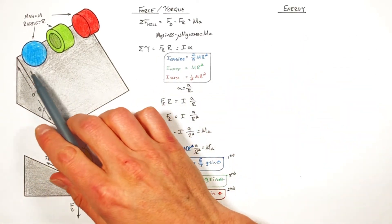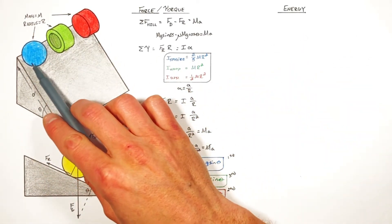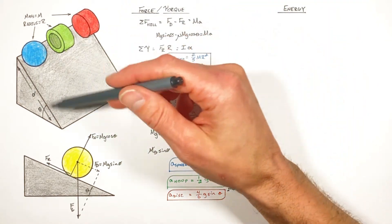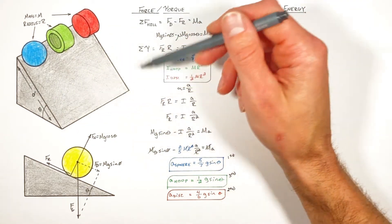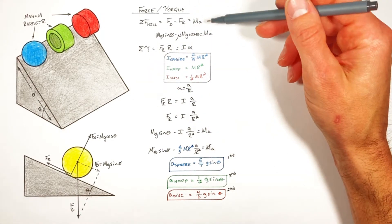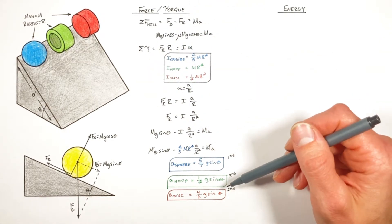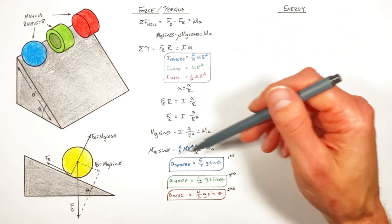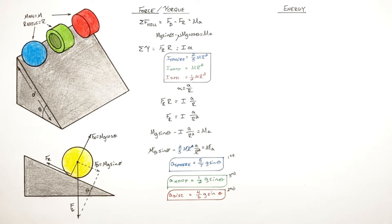All right YouTube, we've been talking about this situation where we've got a ball, a hoop, and a disc, and we're allowing them to roll without slipping down some hill. We're trying to solve for the acceleration of each of these objects at the bottom of the hill. Now we've done this using force and torque, which is the way you'd typically see this worked in a textbook or the way most professors would explain this problem.